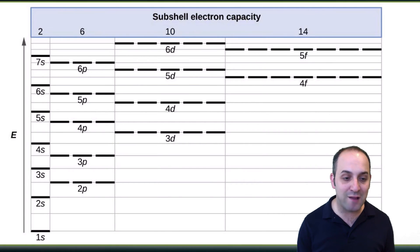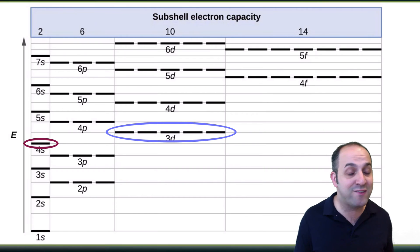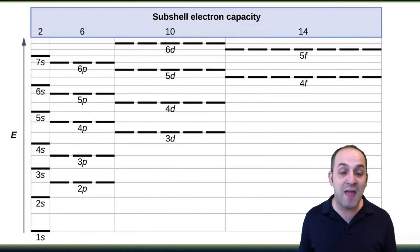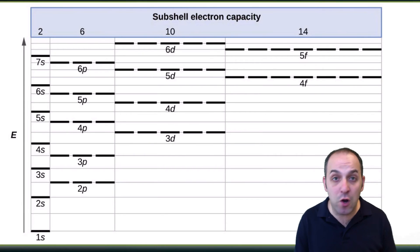We see this beginning with principal energy level 3. If you look at the 3d sublevel, you can see that it actually occupies a higher energy than the 4s sublevel. This means that we would actually fill our electrons into the 4s sublevel first before we fill the 3d sublevel. Then we would go through and fill 4p. You can see that this trend continues as we move into higher principal energy levels. So for instance, 4f actually occupies a higher energy than 5s, 5p, and 6s, which means that they would all get filled first before we started putting electrons into that 4f sublevel.